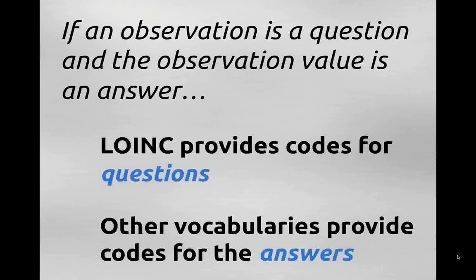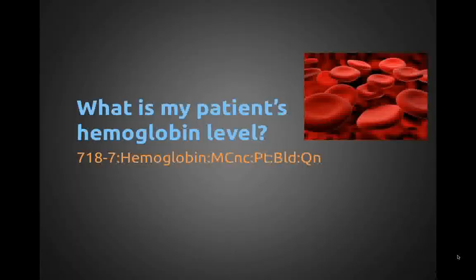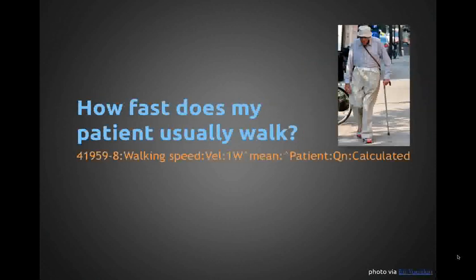Another way to think about what LOINC does is to think about questions and answers. If an observation or measurement is a question and the observation value is the answer, then LOINC is designed to provide codes for questions. A lot of times the result is a numeric quantity — you just need the number and the associated units of measure. But in other cases the answer might be a coded entity. LOINC largely leaves it up to other vocabularies such as SNOMED or ICD to provide codes for the answers. From a clinical laboratory perspective, the question might be: what is my patient's hemoglobin? And LOINC provides a code and structured name for that.